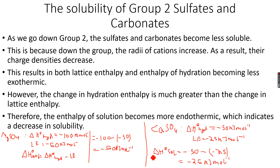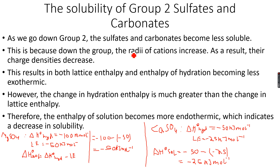As we go down the group, the enthalpy of solution has become less exothermic — or equivalently, more endothermic. It was minus 50 kJ/mol for MgSO₄, and as we move down to CaSO₄ it becomes minus 25 kJ/mol. Since a more exothermic enthalpy of solution indicates greater solubility, becoming more endothermic going down the group indicates a decrease in solubility. This is why group 2 carbonates and sulfates become less soluble down the group.